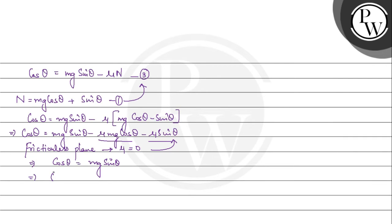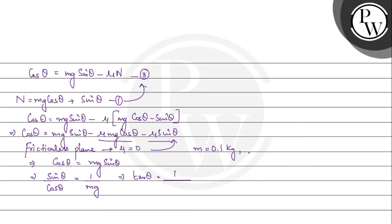So we can have sin theta divided by cos theta equal to 1 divided by m times g. This implies tan theta equals 1 divided by — from the question, m is 0.1 kg and g is 10 meter per second square — therefore we have it as 0.1 multiplied by 10. This implies tan theta equals 1, which implies theta equals 45 degrees.